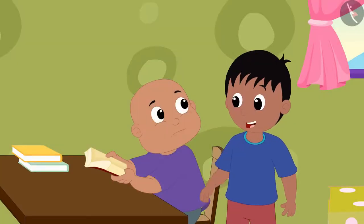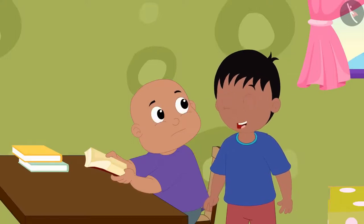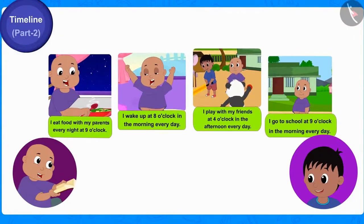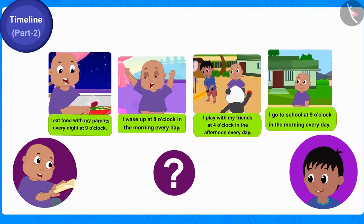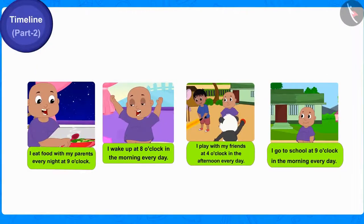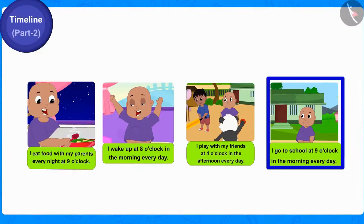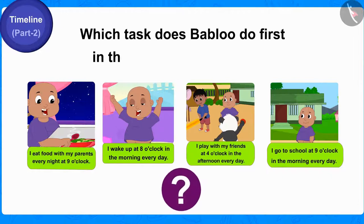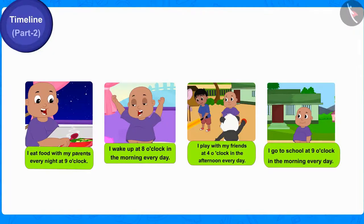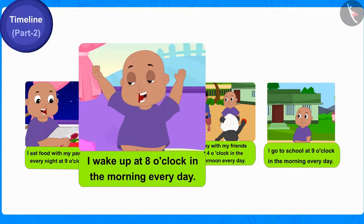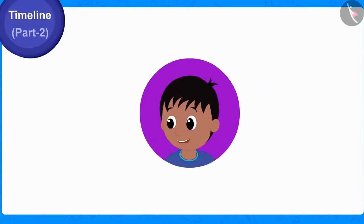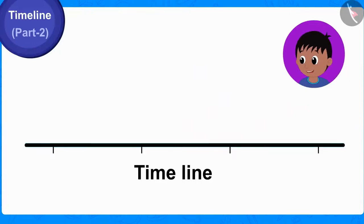Raju said: first we will write the very first task in your daily routine on the timeline. Of these four tasks, which task do you do first and at what time? Children, can you tell out of these four tasks which task Babalu does first in the day and at what time? Well done children, you have found the right answer. Babalu wakes up every day at 8 o'clock in the morning. Raju drew a timeline in Babalu's diary and wrote '8 o'clock in the morning' as the very first task.